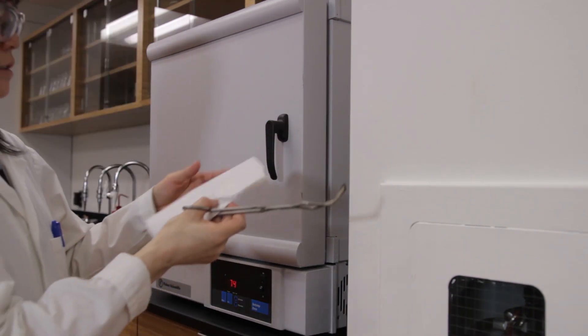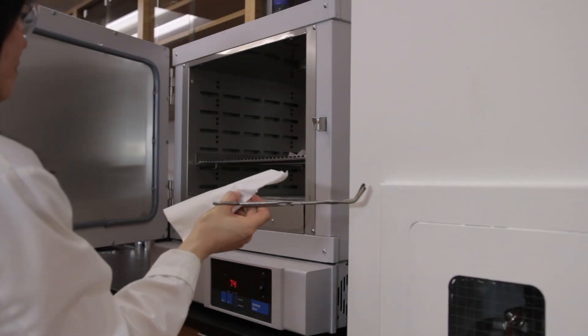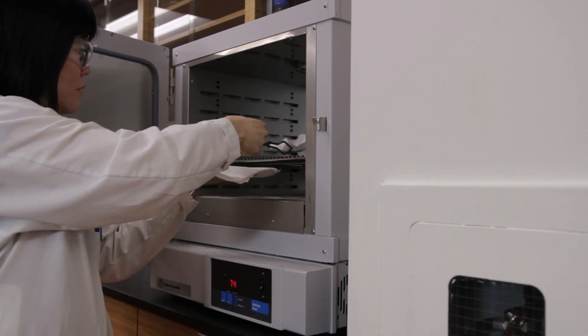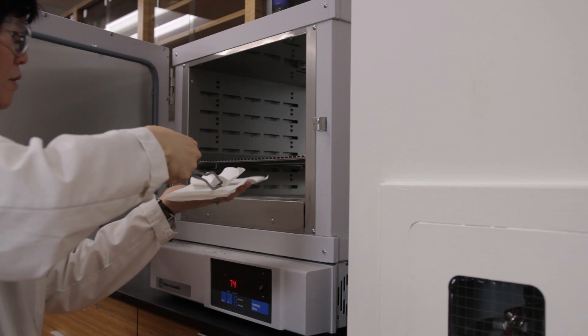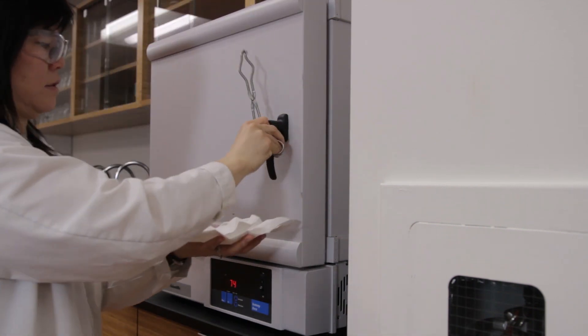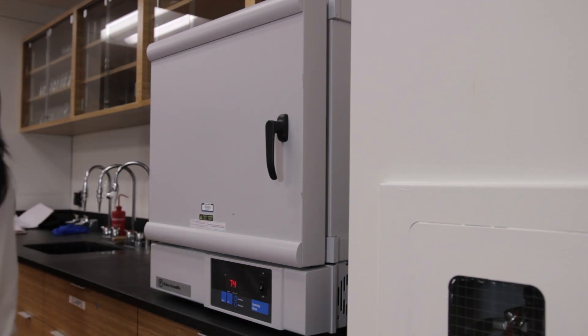Remove the filter paper and watch glass from the oven using crucible tongs. Put some paper towel on your hand and place your hand just underneath the watch glass in case it slips from the tongs. Carefully place the watch glass on the bench top and allow them to cool to room temperature.